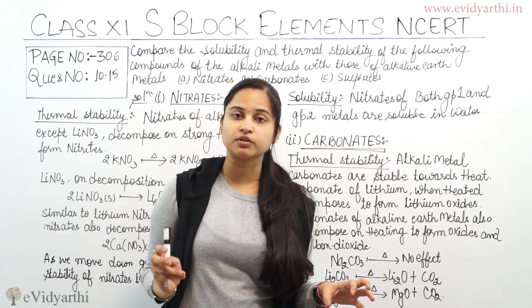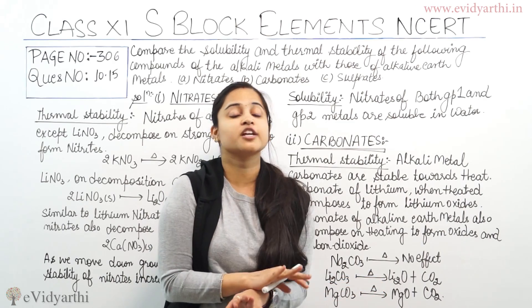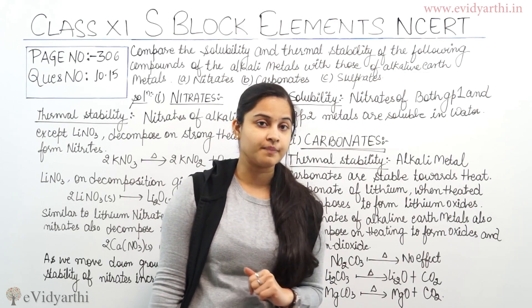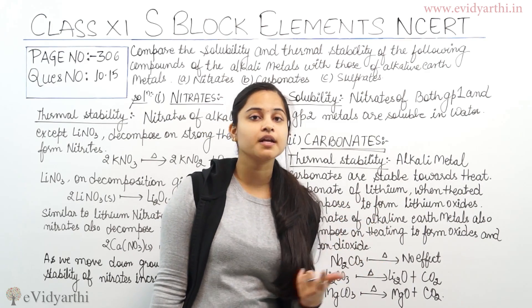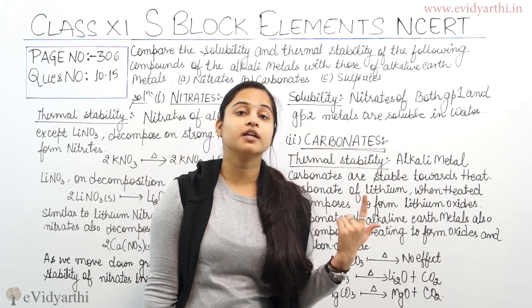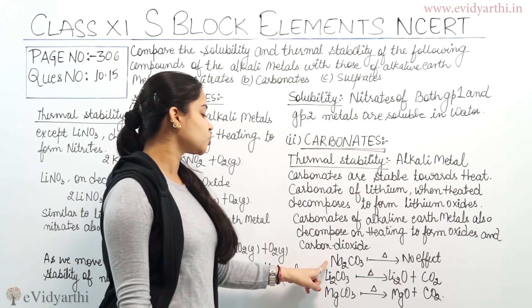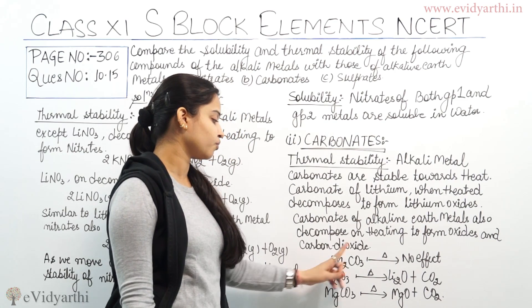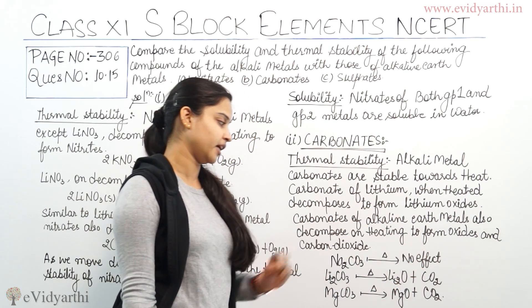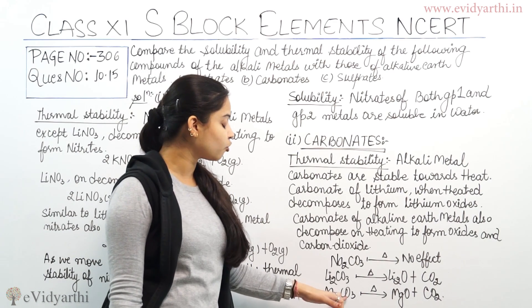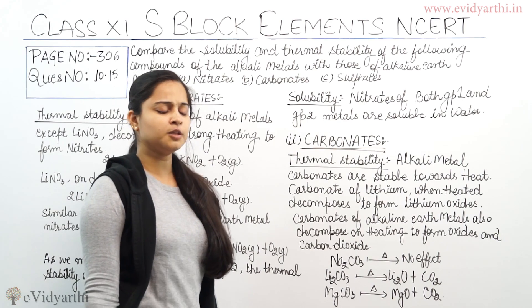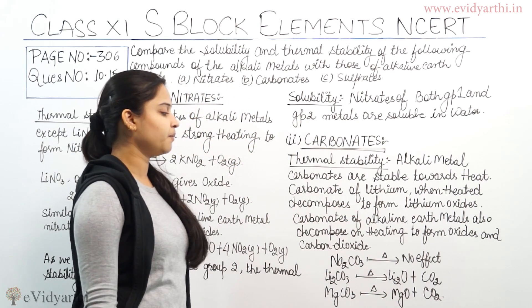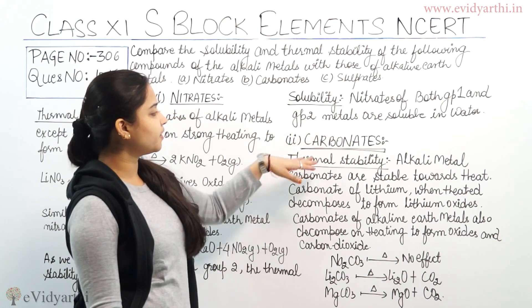Alkali metals are stable to heat, but the exception is lithium carbonate which decomposes to lithium oxide. For alkaline earth metals, all carbonates decompose on heating to give oxide plus CO₂. For example, magnesium carbonate (an alkaline earth metal carbonate) decomposes to give MgO plus CO₂.